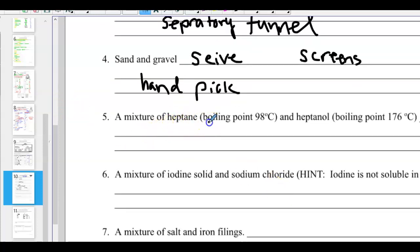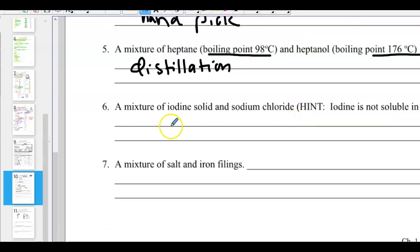Sand and gravel. We could use a sieve or a colander. Or you could hand pick all those pieces apart. You also could use a series of screens. That all would work. A mixture of heptane, that's a chemical with a boiling point, and heptanol with a different boiling point. This is from your video notes. You would separate these via distillation. Give a little bit more information. So you'd heat it up at 98 degrees. All the heptane would come off. And then when you get to 176, all the heptanol would come off. You can collect those gases with some special glassware.